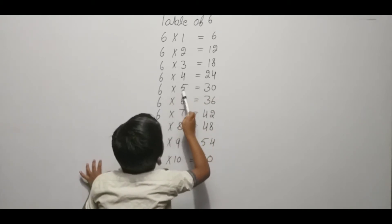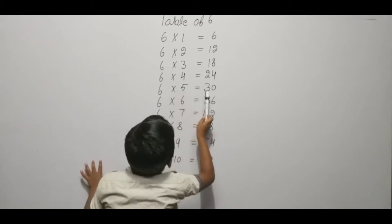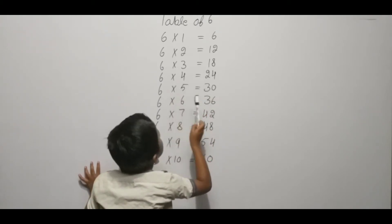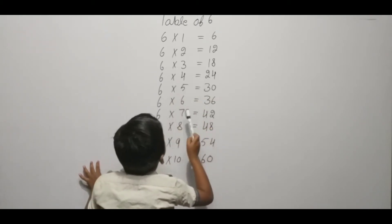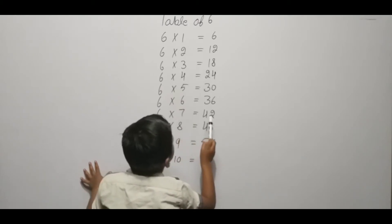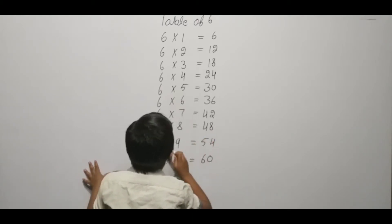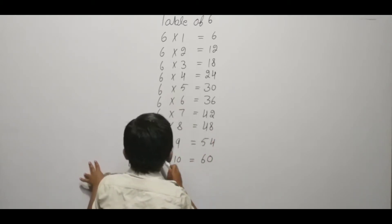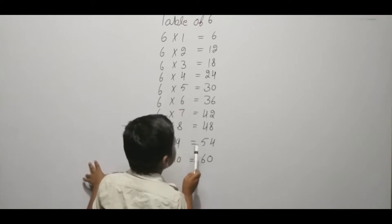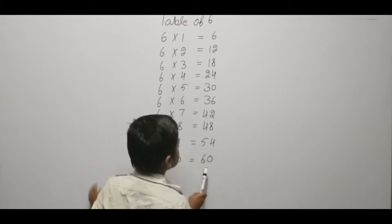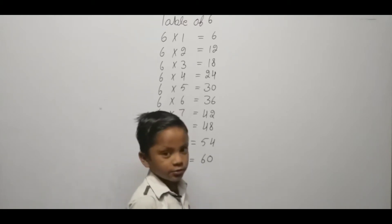Six six ja thirty-six, six seven ja forty-two, six eight ja forty-eight, six nine ja fifty-four, six ten ja sixty. Thank you.